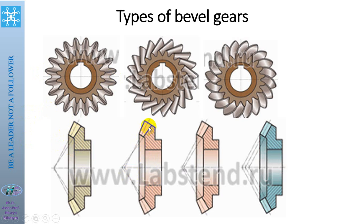But at some forms, the pitch cone and root cone apex points do not coincide on one point. And sometimes there is a type where the pitch cone, root cone, and external cone are parallel to each other. In this case, the dimensions of the teeth along their lines are equal to each other at the seams.